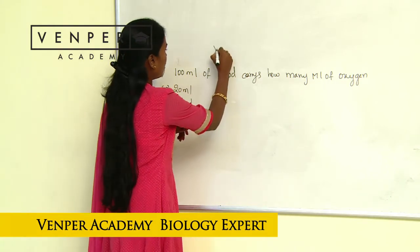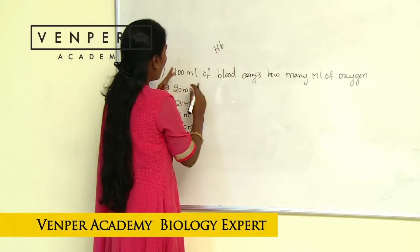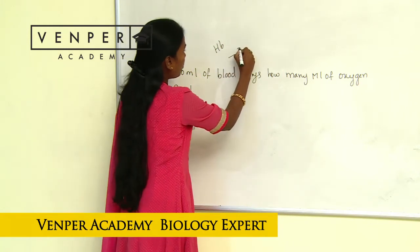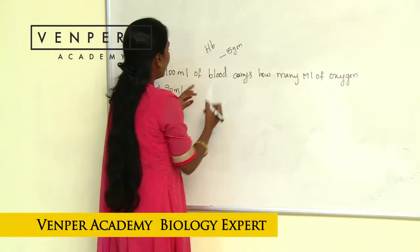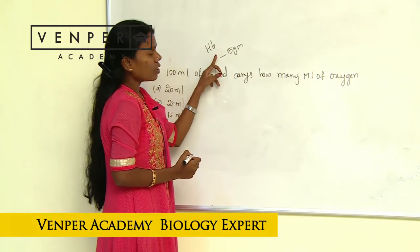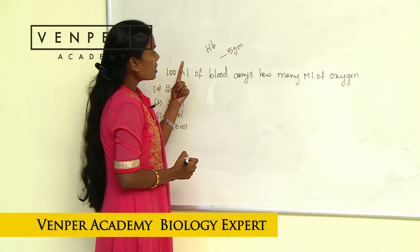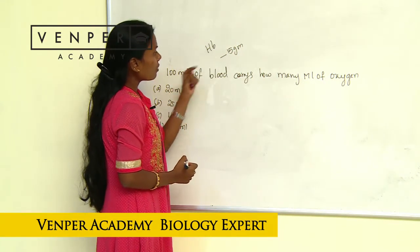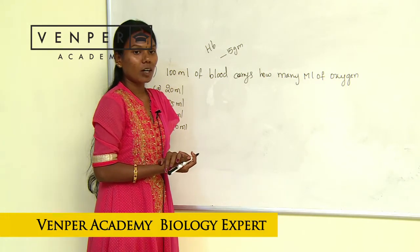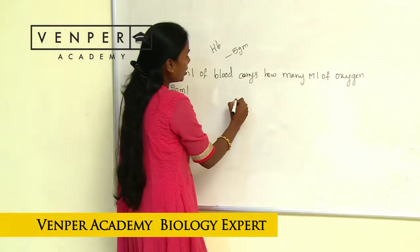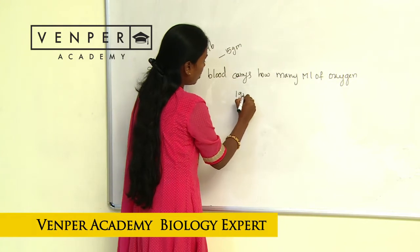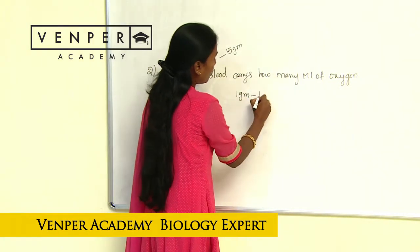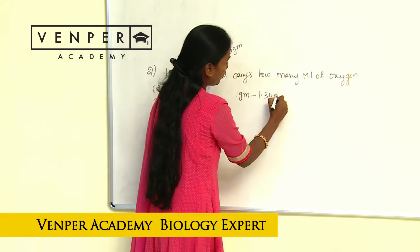The blood contains hemoglobin (HB). Here, 100 ml of blood contains an average of 15 grams of HB. This 15 grams of HB is present in 100 ml of blood. The function of HB is nothing but the carrying of oxygen. Each gram of HB helps in carrying 1.34 ml of oxygen.